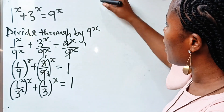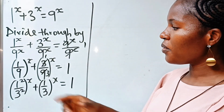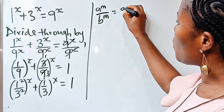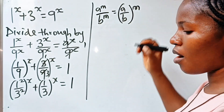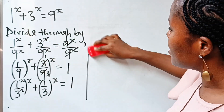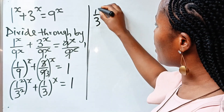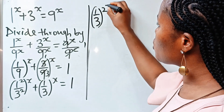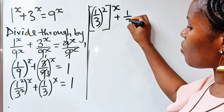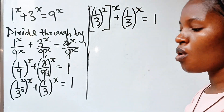Look at what we have here. We have a to the power of m divided by b to the power of m is equal to a divided by b raised to the power of m. So that means we can write this as 1 over 3 raised to the power of 2, everything raised to the power of x, plus 1 over 3 raised to the power of x, is equal to 1.